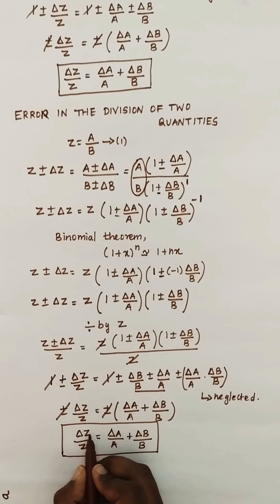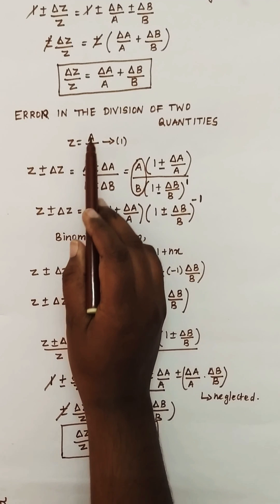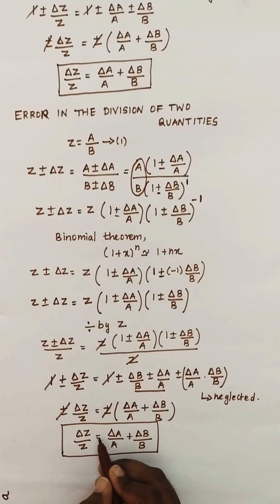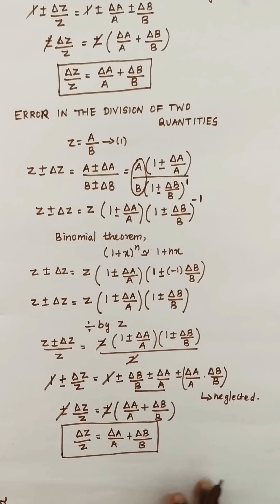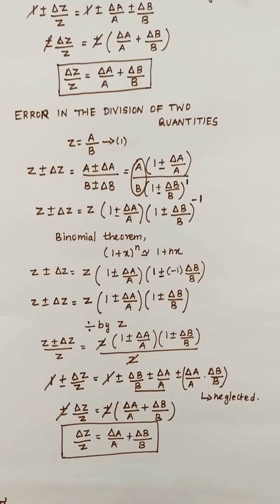So delta z/z is the fractional error, and the maximum fractional error in the division of two quantities is equal to the sum of the fractional errors of the individual quantities. Note that two subdivisions will be asked in a five-mark question — they will club any two: either addition, multiplication, subtraction, or product. So practice this, it will be very easy for you. Thank you for watching this video.